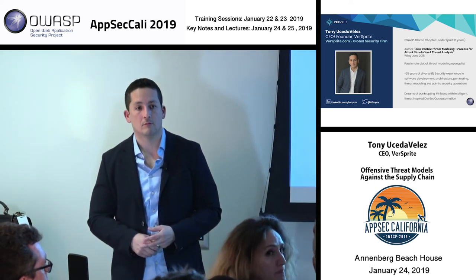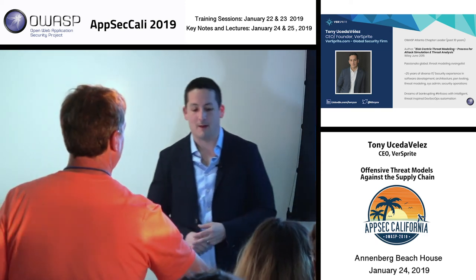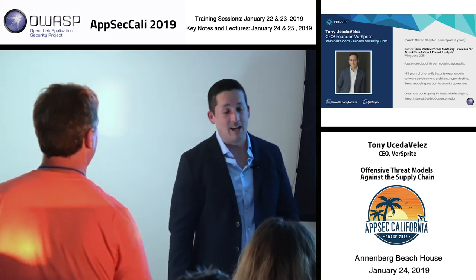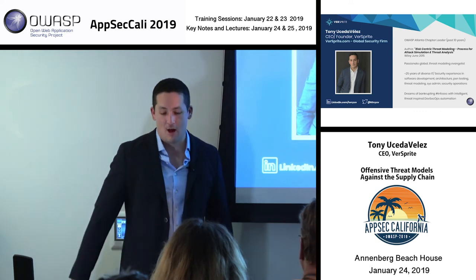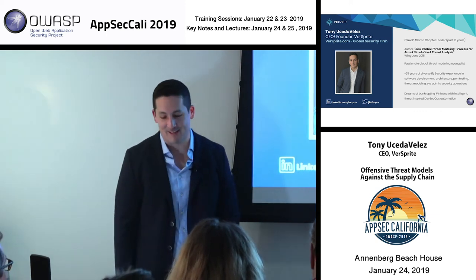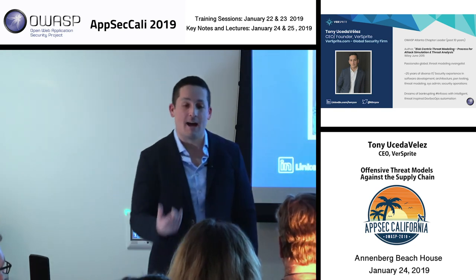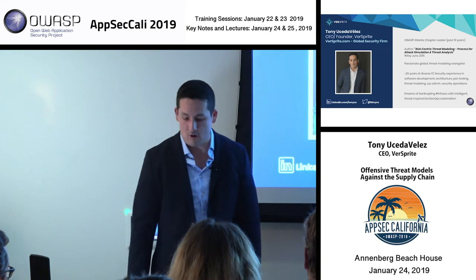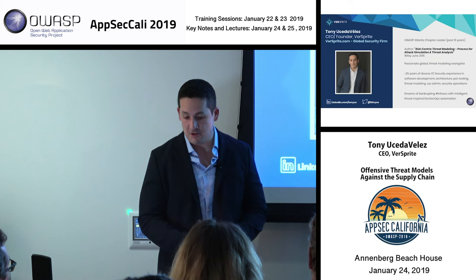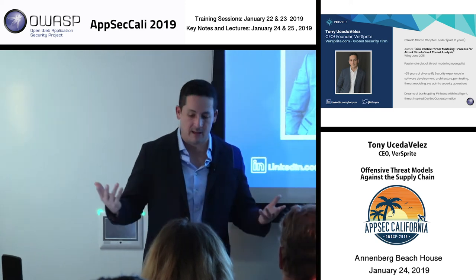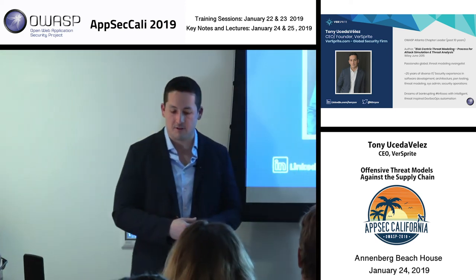Audience question: I just looked up your book and it looks really interesting, but on Amazon it's $100. Speaker: I have discount codes — there are a couple of cheaper ways to get it. If you want a discount code, I'll tweet it out. Or you can email TonyUV at versebrite.com or TonyUV at OWASP.org and I'll give you the discount code. Wiley is a good publisher, but they need to pay for their New York office space.